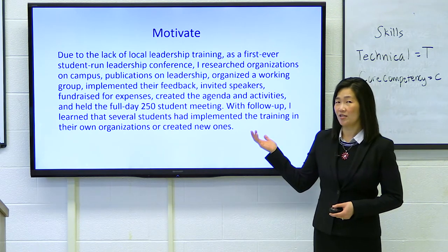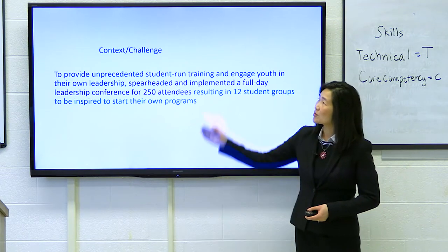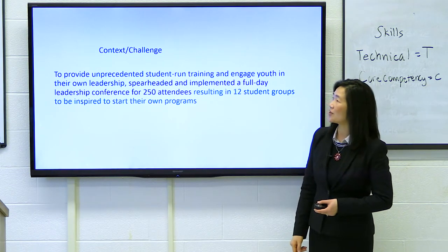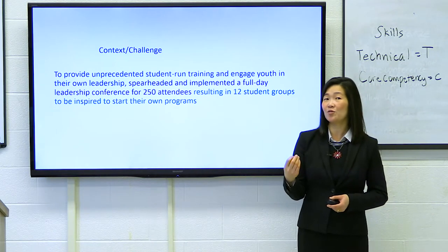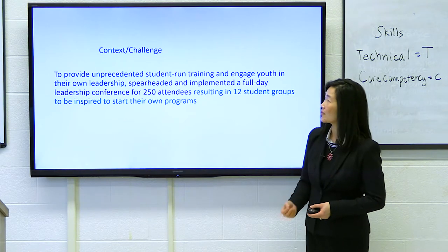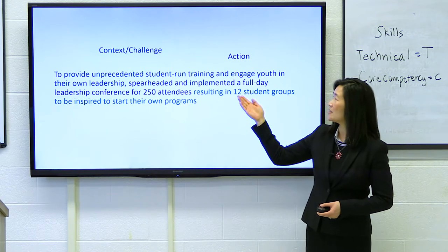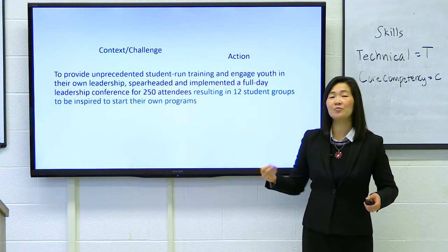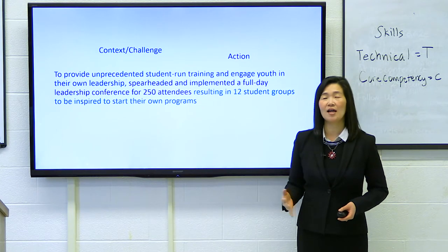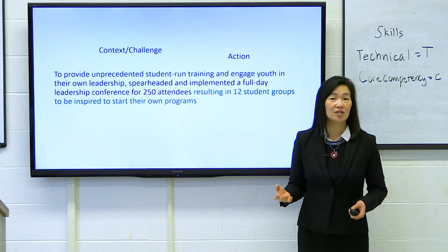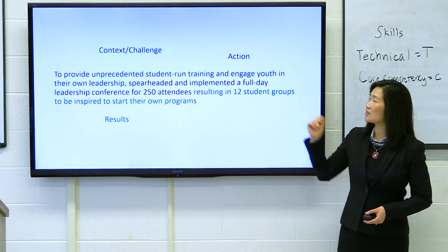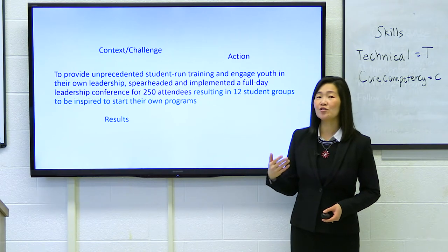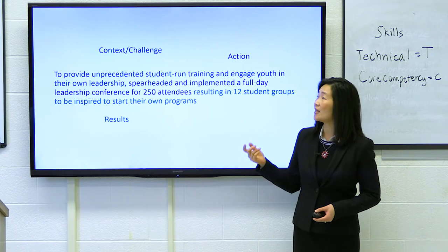So let's rewrite this as a CAR statement. The context or challenge this student was facing: to provide an unprecedented student-run training and engage youth in their own leadership — that's the why, the golden circle we talked about. The action taken: spearheaded and implemented a full-day leadership conference for 250 attendees. Whenever you can quantify something, you should — it doesn't have to be a big number, it can be 12 or four, just so employers know the scale you worked at. And the result: resulting in 12 student groups being inspired to start their own programs.